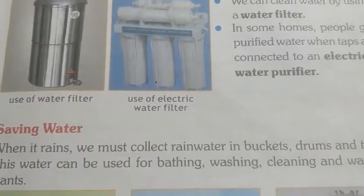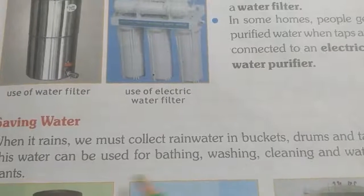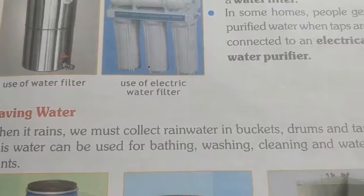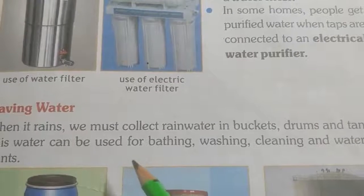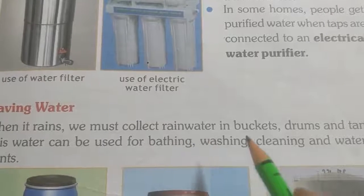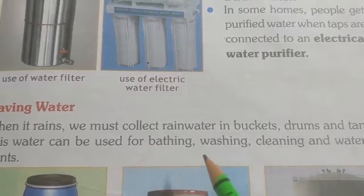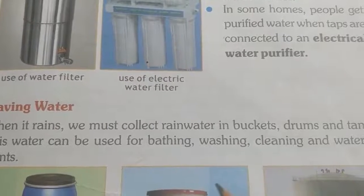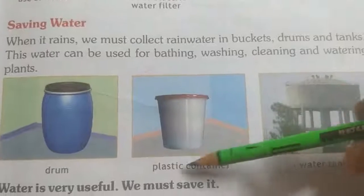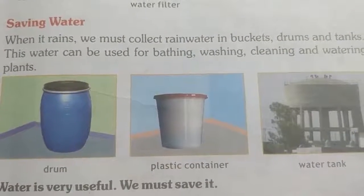Saving water: when it rains, we must collect rainwater in buckets, drums, and tanks. This water can be used for bathing, washing, cleaning, and watering plants. हम बारिश का water bucket, drums और tanks में collect कर सकते हैं. Water is very useful — हमें इसे save करना चाहिए.